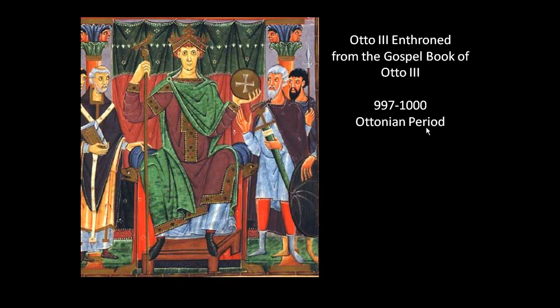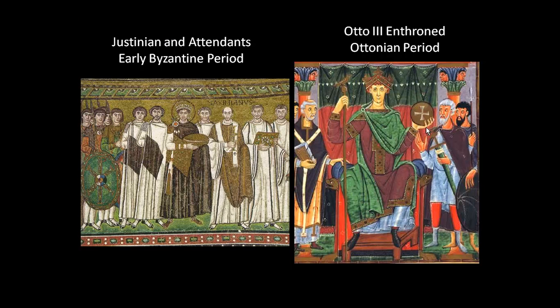The composition replicates the Justinian and His Attendants mosaic from San Vitale. The emperor is centrally placed wearing the regal color purple, with a bedazzled crown — though interestingly Otto III lacks a halo. On either side of Justinian we have the military, clergy, and administration representing the full Byzantine government. In the Otto III image it's slightly different: on one side is the clergy, and on the other are wealthy landowners who played a role in government.